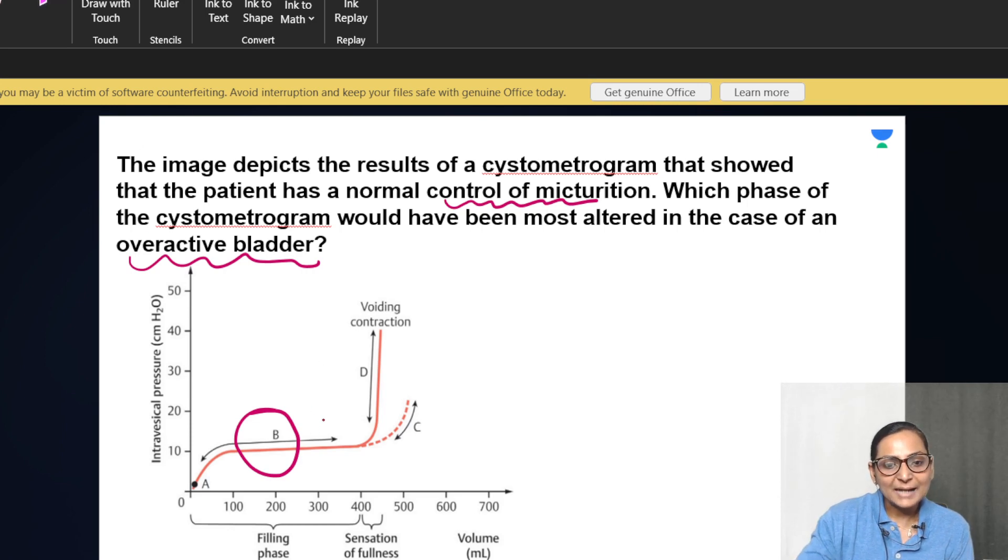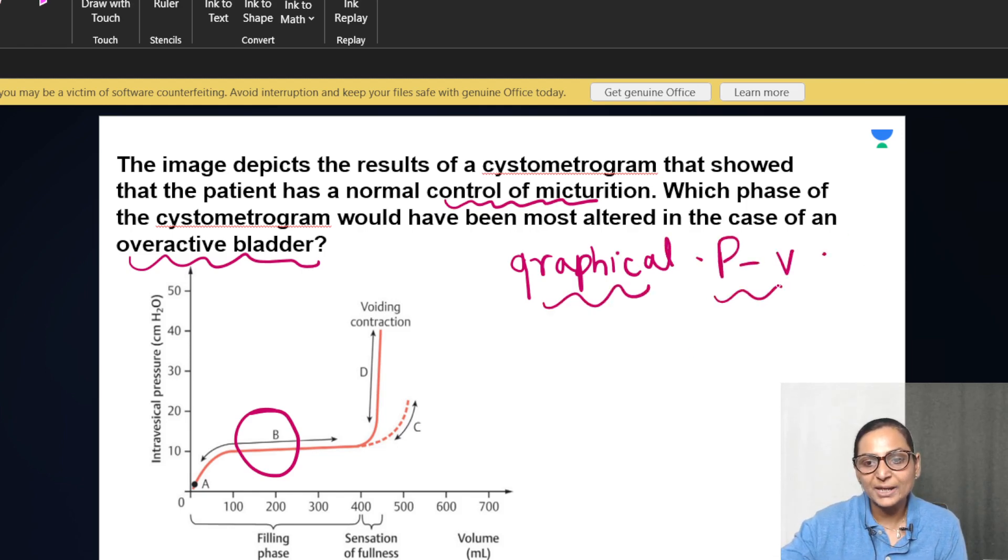You must remember that this cystometrogram is a graphical representation of the pressure-volume changes in the bladder, where the x-axis is volume and the y-axis is intravesical pressure. Whenever there is a graph-based question in physiology, the first thing we must look at is what is at the x-axis and y-axis.